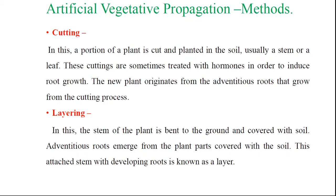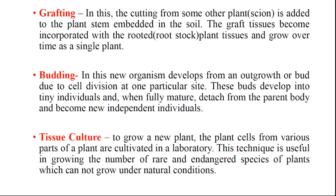The second one is layering. In this method, the stem of the plant is bent to the ground and covered with soil, and adventitious roots emerge from the plant parts covered with soil. This attached stem with developing roots is known as the layer, and from the layer we obtain a new plant. In grafting, there are two parts that play an important role: one is the scion, and the second one is the rootstock.